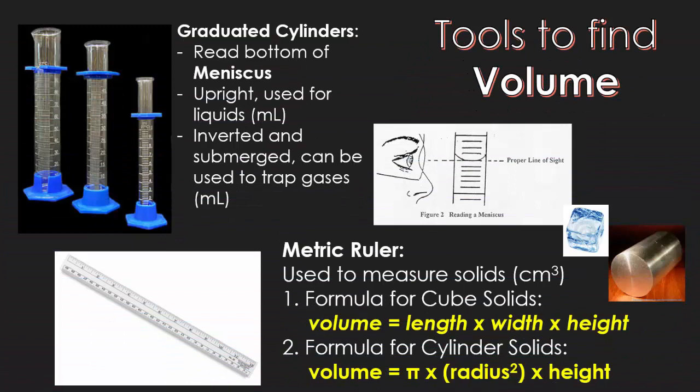We're going to be using two different types of tools to find volume in this course. The first type are graduated cylinders. When you use a graduated cylinder, you are going to be specifically looking for a meniscus. The meniscus is when you look at the cylinder at eye level, it is the lowest part of the curve of the liquid. That is called the meniscus.